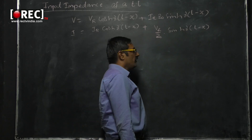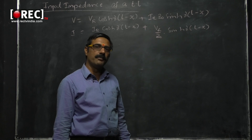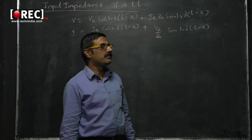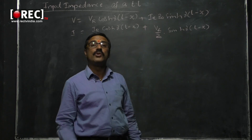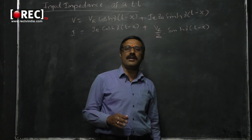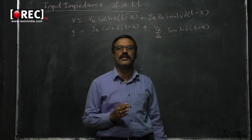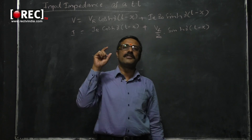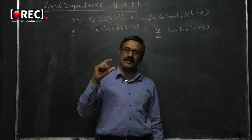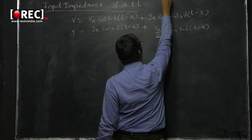From these two equations I am going to derive the input impedance of the transmission line. The conditions to be applied: input impedance, or source impedance, pertains to the ratio of input voltage to input current.